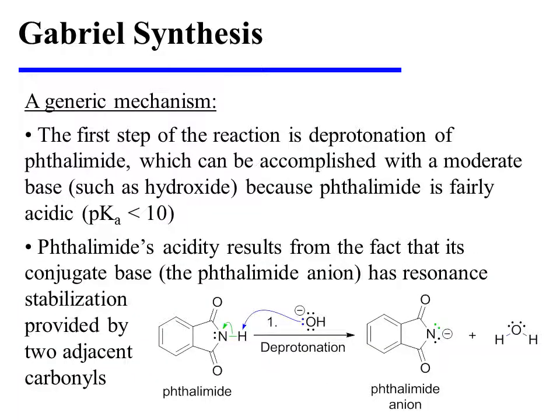The first step of the reaction is merely the deprotonation of thalamid, which can be accomplished with a moderate base such as hydroxide, because thalamid is fairly acidic, having a pKa less than 10.